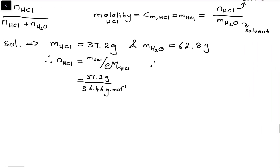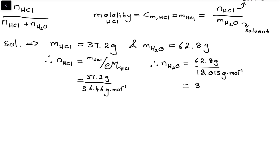The number of moles of water is 62.8 grams divided by the molar mass of water, which is 18.015 grams per mole, giving a value of 3.48 moles of water. The number of moles of HCl is 1.02 moles of HCl.